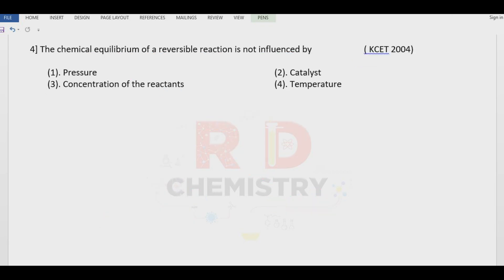Question number four. Chemical equilibrium of a reversible reaction is not influenced by which factor? Increasing or decreasing pressure can shift the reaction forward or backward. Concentration changes can drive the reaction to the product side. Temperature can also lead to forward or backward reaction. The catalyst increases the rate of both forward and backward reactions to the same extent, so there is no change in the position of chemical equilibrium. Therefore the answer is option number two.